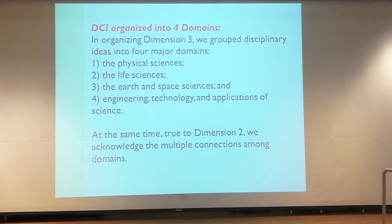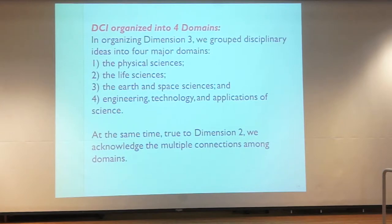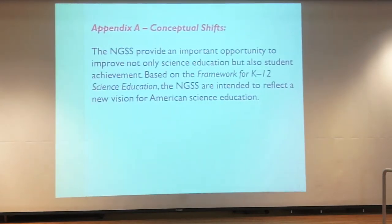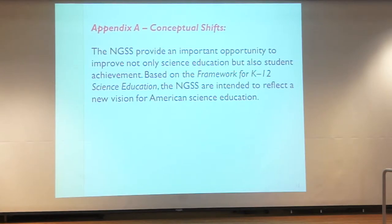The disciplinary core ideas are organized into four domains representing four science groups: the physical sciences, the life sciences, the earth and space sciences, and engineering, technology, and applications of science. True to dimension two, we acknowledge multiple connections between the domains. I want to share a couple of appendices — more detailed than what I'll cover here, but to stimulate you to take a look at them for a better grasp of what is being discussed with NGSS.